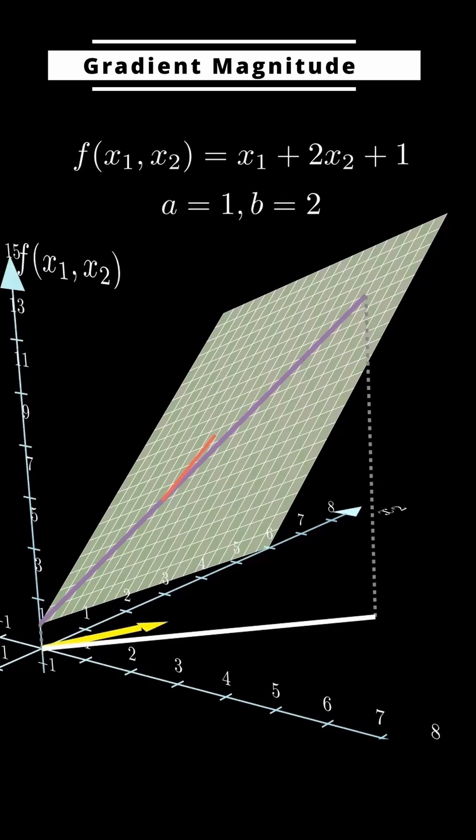In other words, the gradient's magnitude tells us if we move one unit in the gradient direction, the function increases by exactly that much.